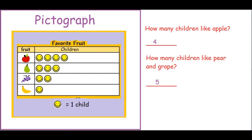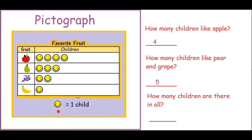Let's now answer another question. How many children are there in all? Remember boys and girls, one smiley is equal to one child. So let us count all the children in our pictograph. Let's count: one, two, three, four, five, six, seven, eight, nine, ten. Boys and girls, there are ten children in all.